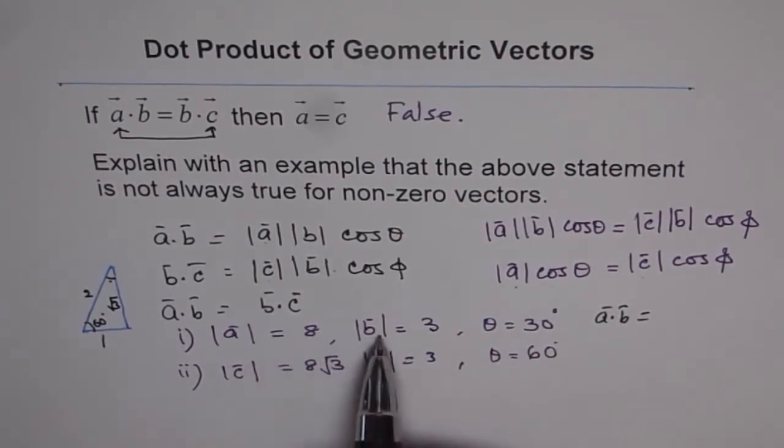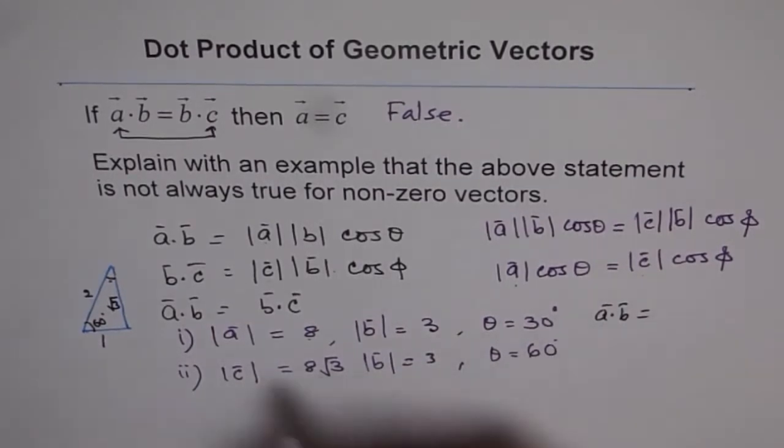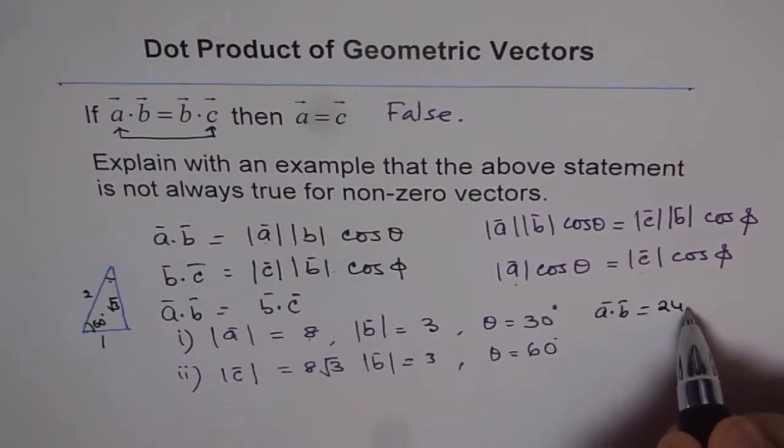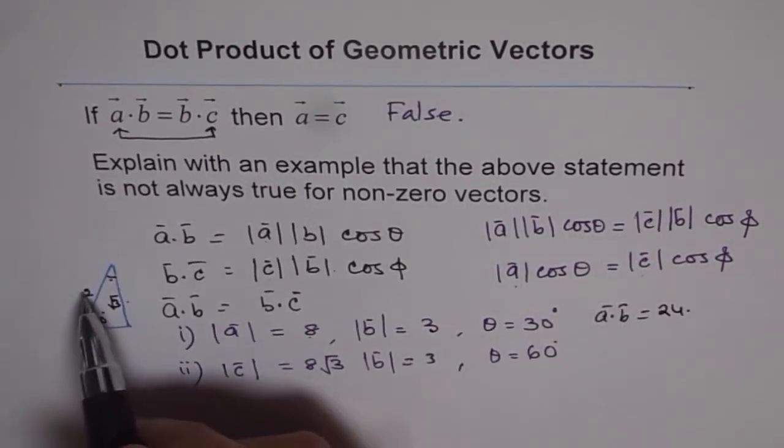So A dot B cos of 30 degrees will be 8 times 3, 24. So we get magnitude is 8 times 3, 24. So we get 24 times cos of 30. Cos of 30 is square root 3 over 2.